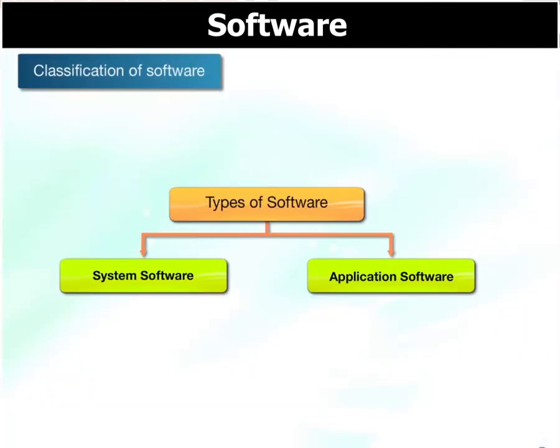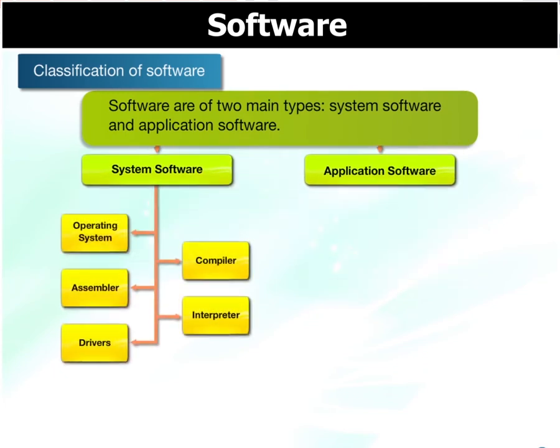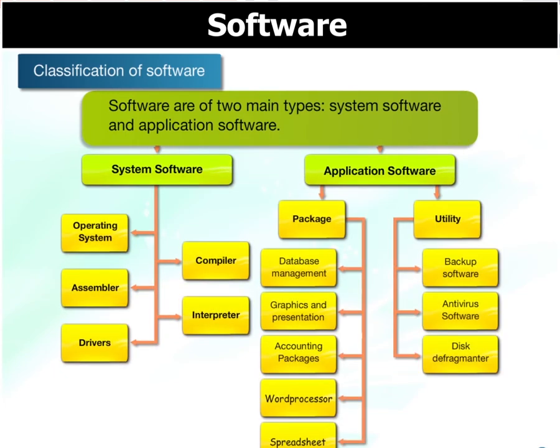How many types of software are there? Software are of two main types: system software and application software.